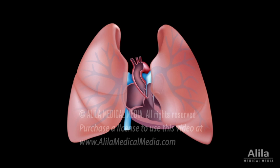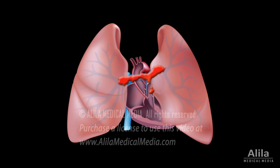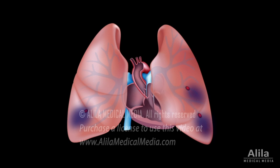Pulmonary embolism often occurs at multiple sites and involves both lungs at once. The lower lobes of the lungs are more commonly affected. Large emboli can block the main pulmonary artery that branches to the two lungs, causing the so-called saddle embolism, the most fatal form. Small emboli block small arteries, resulting in death of the downstream lung tissue known as pulmonary infarction.